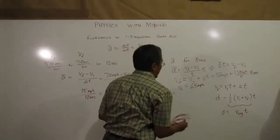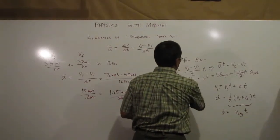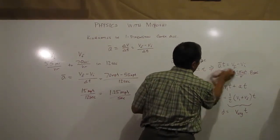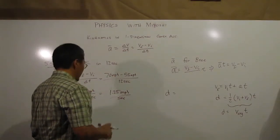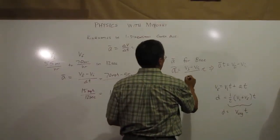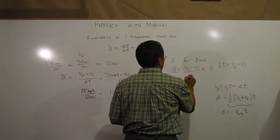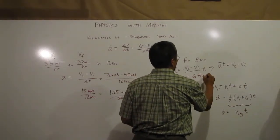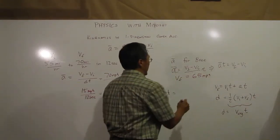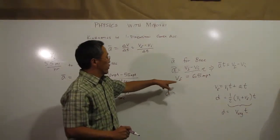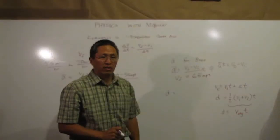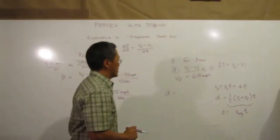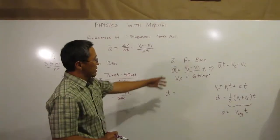Now, what if instead I wanted to find the distance that I went, going from that 65 miles per hour, so I'll put that back up here. What if I wanted to find how far I went when I went from 55 miles an hour to 65 miles per hour?